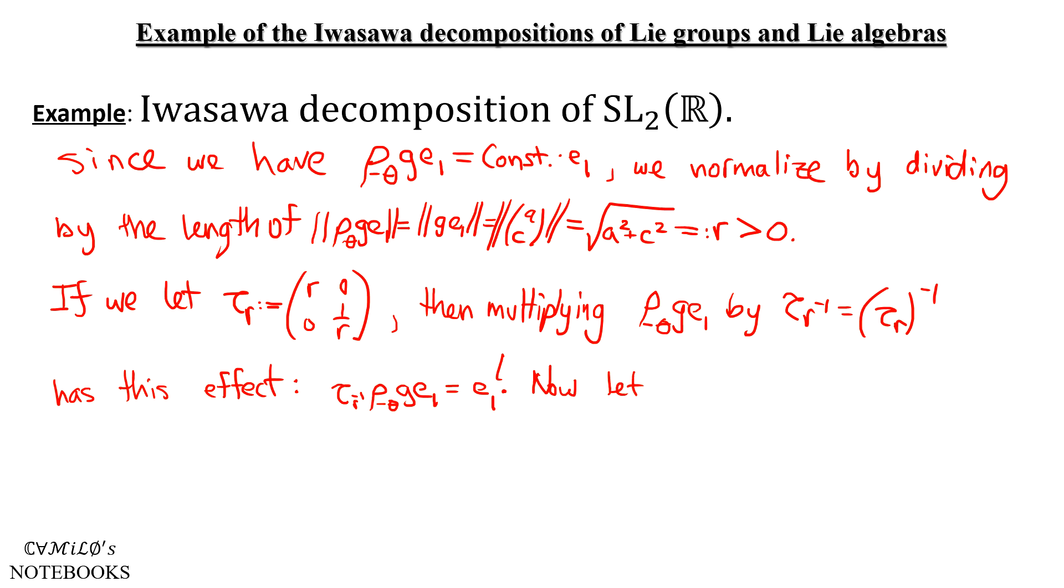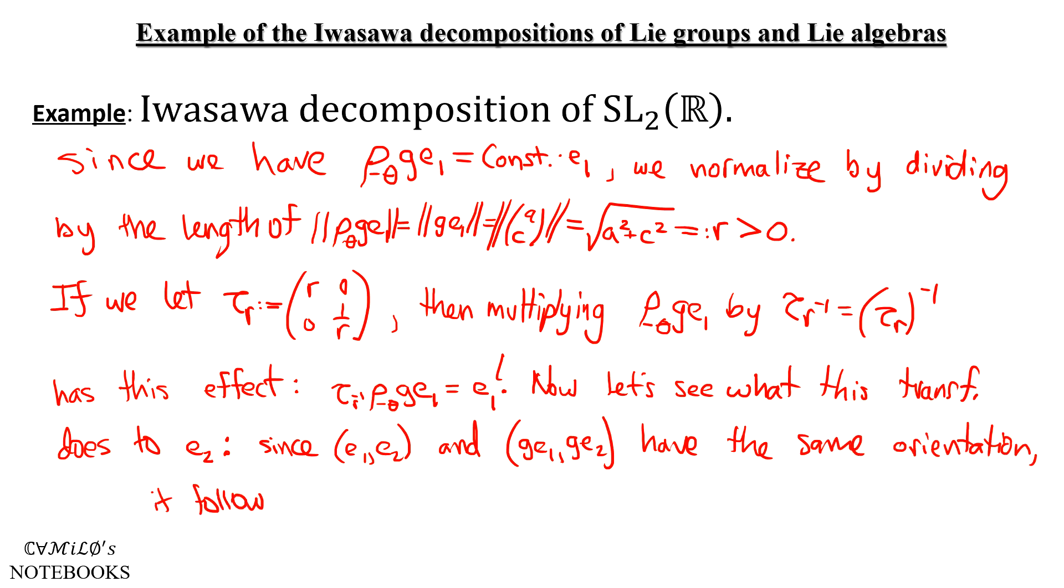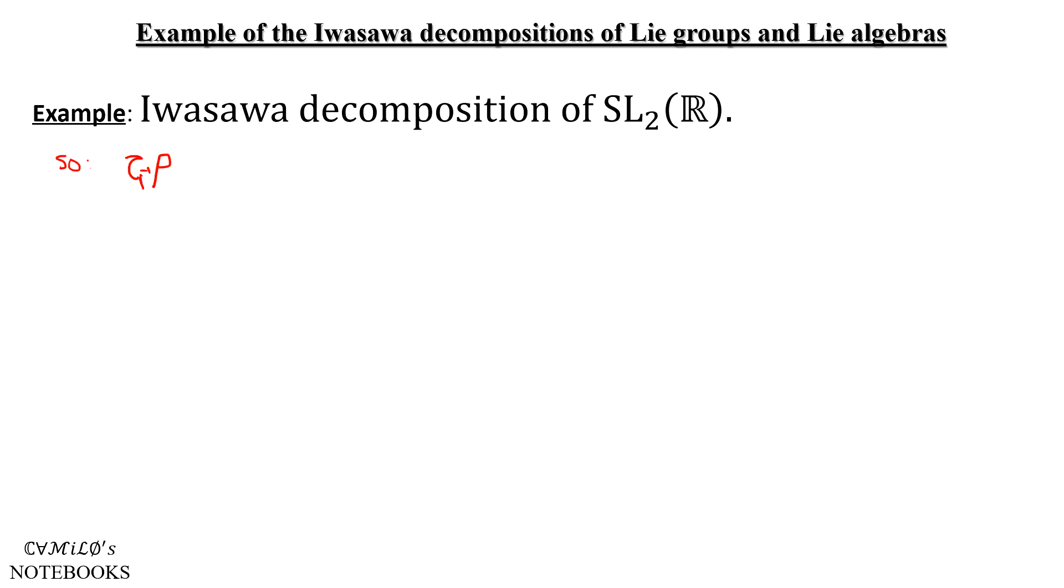So now let's see what this transformation does to E₂. Again, since these ordered pairs have the same orientation by comments from before, it follows that this vector τ_R inverse ρ_{-θ} times G times E₂ will be somewhere in the upper half plane, and specifically somewhere in the first quadrant. However, for our purposes, this won't really matter. So, this composition fixes E₁ and takes E₂ to some vector (X, 1) for some X, since again, τ_R inverse has determinant 1, and hence is orientation preserving.